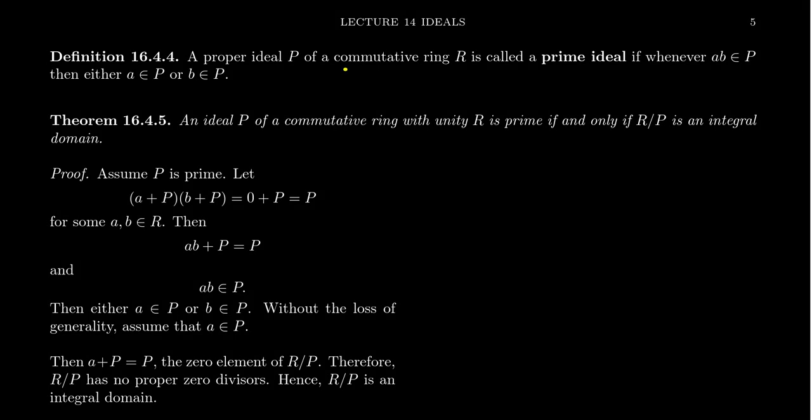Imagine we have a commutative ring R and let P be a proper ideal of this commutative ring. We say that P is a prime ideal.